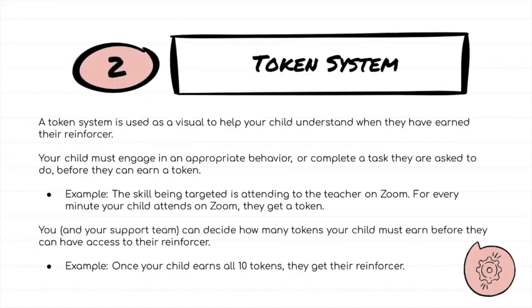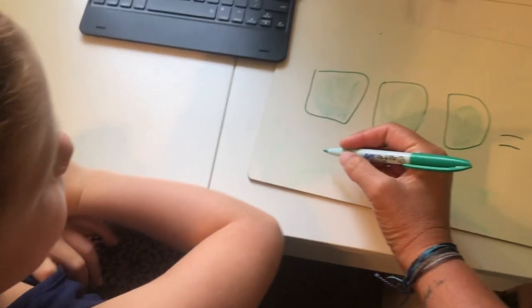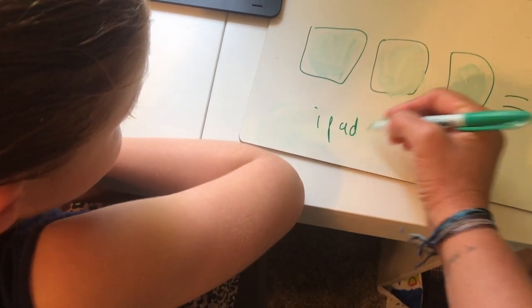Token systems map out for your child how long it's going to take until they get their reinforcer. They also allow you, the parent, to have continual interaction and positive praise as you give them each token. So let's do iPad. Five minutes.